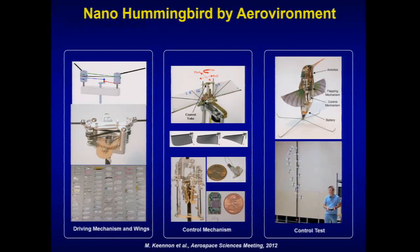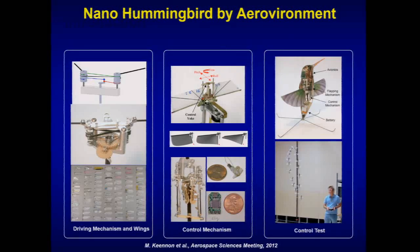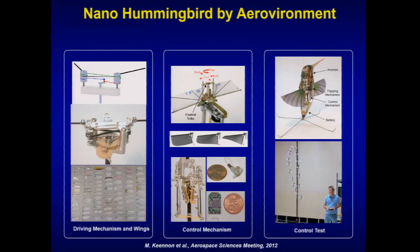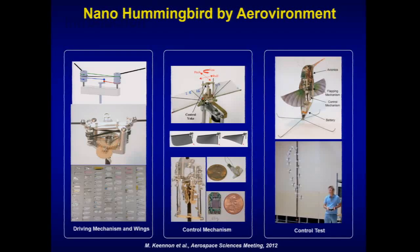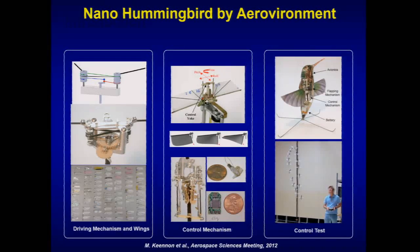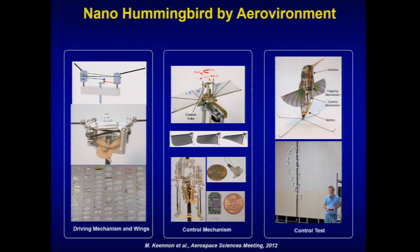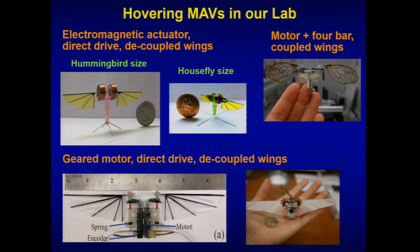One thing I like about the nano hummingbird is they get rid of the four-bar linkage by replacing it with a string, which is very efficient and reduces inertia and power consumption. But if you look at the inside structure, it's very complicated and intricate — there's no way to mass-produce it easily, and it could be prone to breaking at its weakest links.